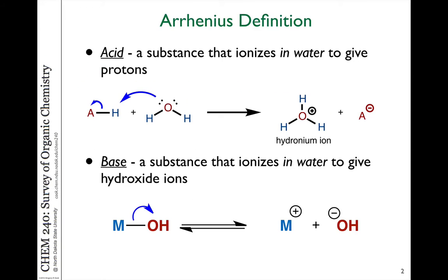Talking about acids, there are several different definitions, and I want to talk about those. The early idea about an acid came from a scientist named Arrhenius, who defined an acid as something which produces a proton, or an H+ ion. H+ ions don't just exist without being attached to something — in particular, water. So the Arrhenius definition came to include the formation of hydronium ions in water.